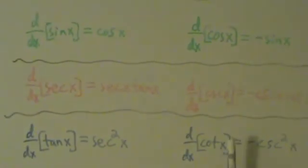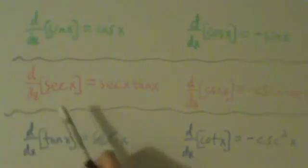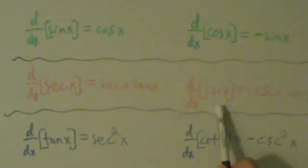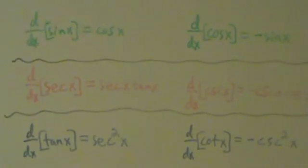So, sine, cosine, cosine, negative sine, secant, secant tangent, cosecant, negative cosecant cotangent, tangent, secant squared, cotangent, negative cosecant squared. So that's just a brief summary of the trig function derivatives.